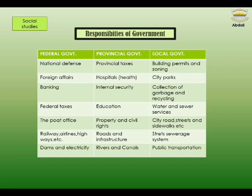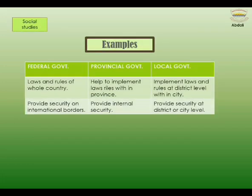To make the country function in perfect harmony, interdependency is inevitable and necessary. For example, the federal government makes laws and rules for the whole country; the provincial government helps to implement those laws and rules within the province; and the local government helps to implement the laws and rules at the district or city level. The federal government provides security and army on the international borders. The provincial government provides internal security and police within the province. The local government also manages security and civil defense at the city or district level.